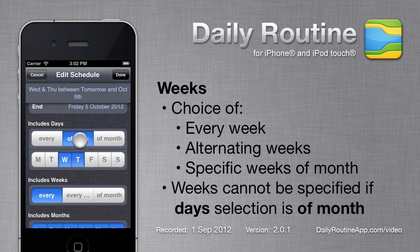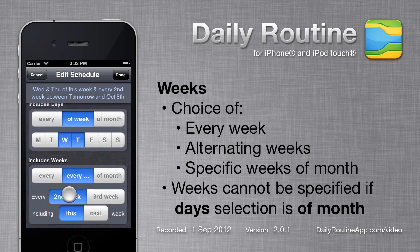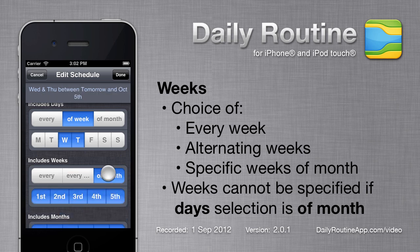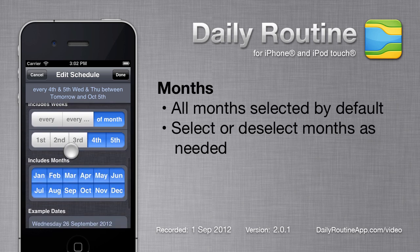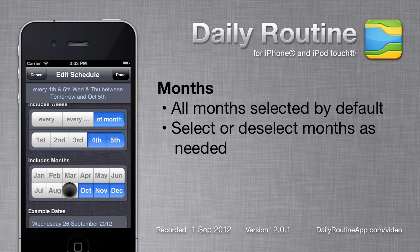The next section is weeks. Again we have a choice — the default is every week, but we can choose alternating weeks and specify an offset. Or we can choose weeks relative to the start of the month; for example, I can select the fourth and fifth week of the month. Finally we have months — by default all months are selected, or we can deselect them as needed.